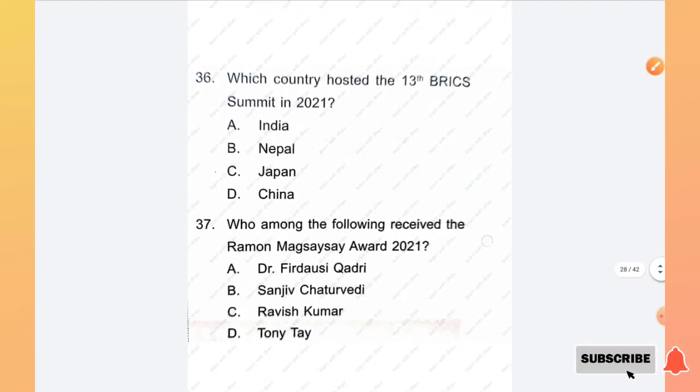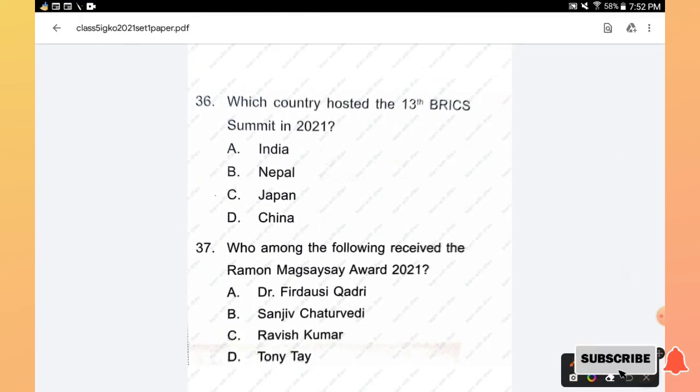Question number 36: Which country hosted the 13th BRICS summit in 2021? India, Nepal, Japan, China. The right answer is option A, India.